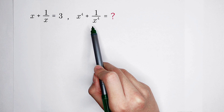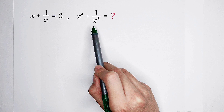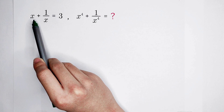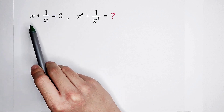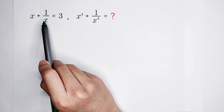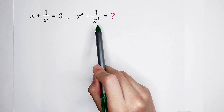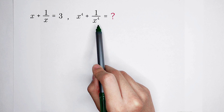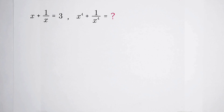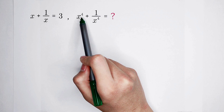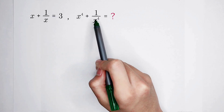How should we solve? Which method should we use? Maybe first by inspection. Here, in the known, the exponents are 1 and negative 1. But here is 4 and negative 4. So this is our problem. What's our goal? Just to raise the exponents from 1 to 4, from negative 1 to negative 4.